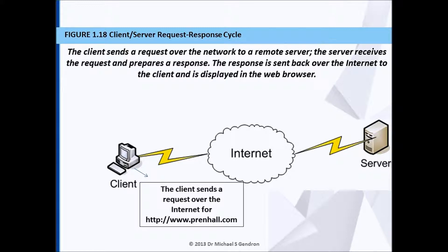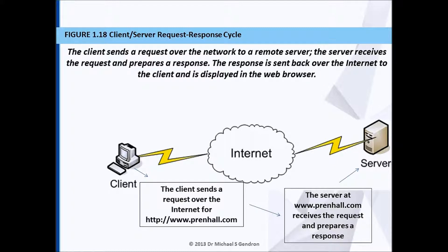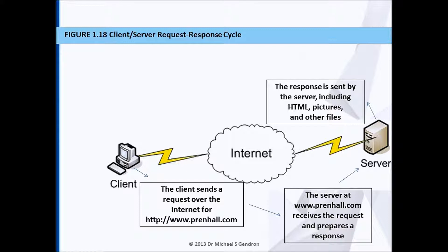The client decides they would like to go to www.prenhall.com, so they prepare a request and send it over the internet. The internet routes that request to www.prenhall.com. When the server at www.prenhall.com receives the request, they prepare a response. The response is then sent back over the internet and may include things like HTML, pictures, or other files.